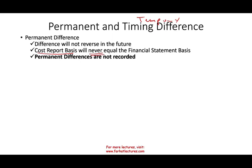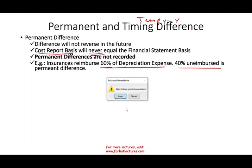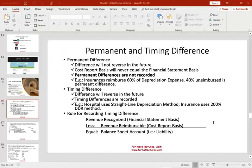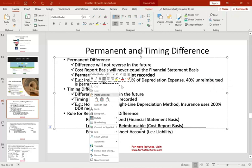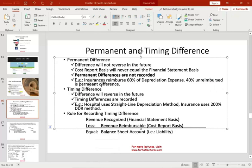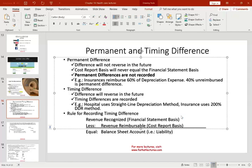An example of a permanent difference is when the insurance company reimburses you 60% for depreciation expense. So 40% is unreimbursed, and it's a permanent difference. This is an example of a permanent difference.